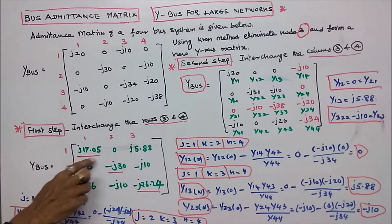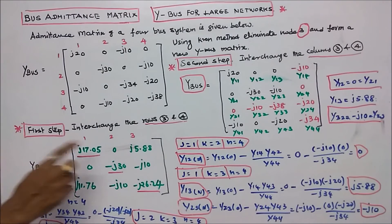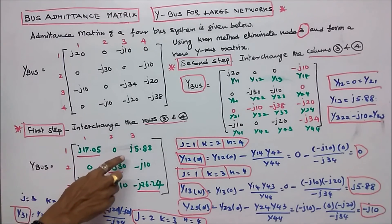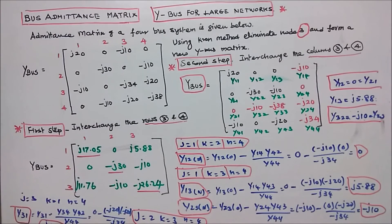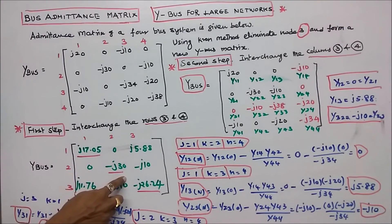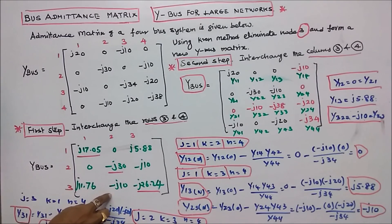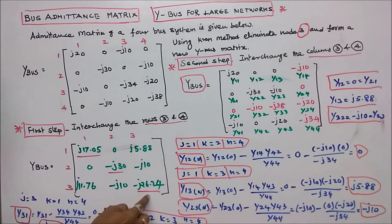The new bus admittance matrix is: y11 = j17.05, y12 = 0, y13 = j5.88; y21 = 0, y22 = minus j30, y23 = minus j10; y31 = j11.76, y32 = minus j10, y33 = minus j26.24. With this, I conclude my lecture. Thanks for listening.